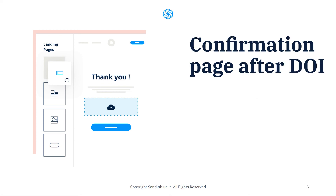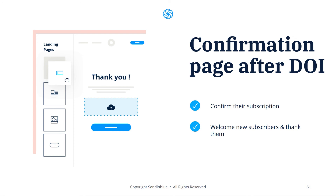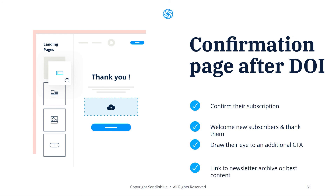After a user has confirmed their double opt-in, you can send them to another page. This page should serve to simply confirm their subscription. You can also welcome new subscribers and thank them for joining your newsletter list. You can even draw their eye to an additional CTA, especially if you have an initial offer with your opt-in — this can bring them back to your shop so they can make a purchase. You can also link to newsletter archives or your best content, whatever you think is valuable for your user.